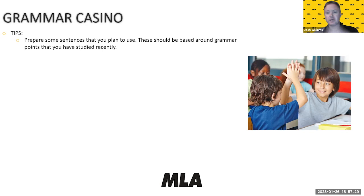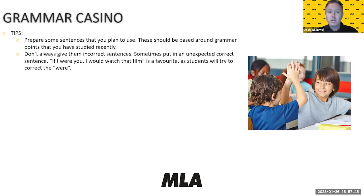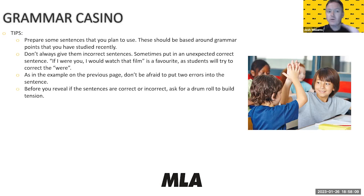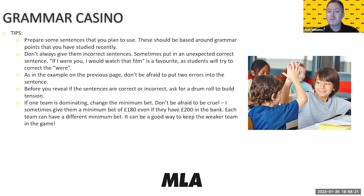It's generally a good idea to prepare your sentences in advance — it can be difficult to come up with them on the spot. Write five or six sentences; you might not use all of them since each round tends to take five to ten minutes. Base them on errors you've noticed in students' homework and what you've been studying recently. Switch it up — don't always give incorrect sentences. Sometimes put in an unexpected correct one to keep them on their toes.